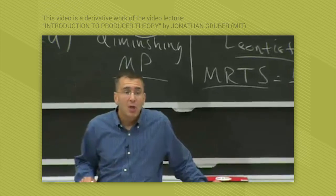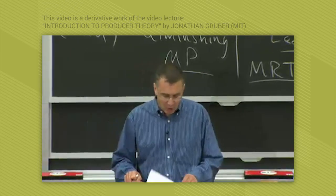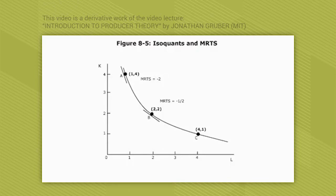As with marginal rates of substitution, the MRTS changes along the isoquant. In figure 8.5, we've drawn a typical isoquant for Q = √(K × L) — specifically the isoquant for all combinations that produce 2 units, the Q = 2 isoquant. Unlike utility, quantity is a meaningful cardinal concept: if you produce 4, you've literally produced twice as much as if you produce 2. The combinations along this isoquant include 1 unit of labor and 4 units of capital, 2 of each, or 4 units of labor and 1 unit of capital — all producing 2 units of output.